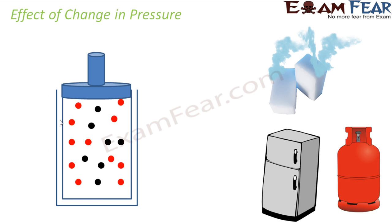Now let's understand the effect of pressure on state changes. If you have a gas and apply high pressure, you can convert it to liquid. At home, the LPG you use is actually pressurized gas that has converted to liquid due to high pressure. Similarly, solid carbon dioxide — dry ice — is a sublimate that converts directly to gas when exposed to normal pressure.